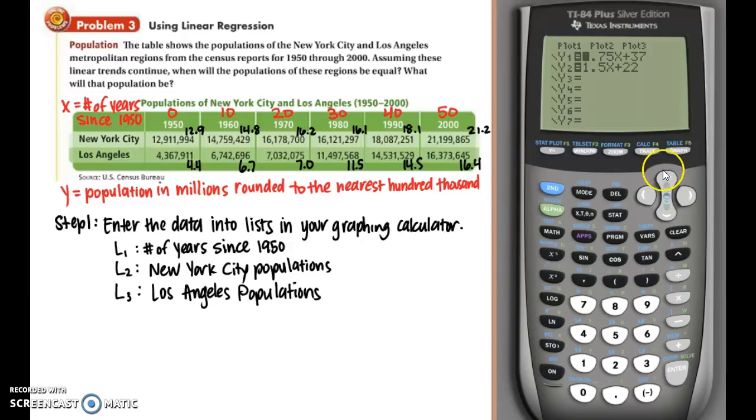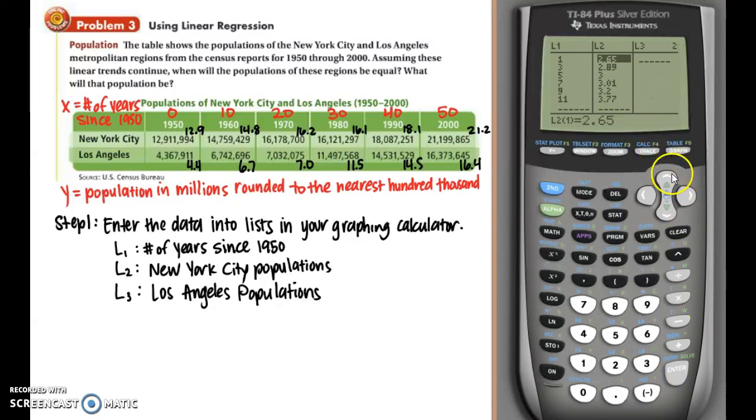So now we want to enter the data into lists in our graphing calculator. So first thing I want to do is go to y equals and clear the two equations that we had from the previous example. Now hopefully you remember the steps for linear regression. First thing you want to do is enter the lists. So go to stat, edit, and remember if you have values still in your two first columns, you want to clear that by highlighting the column title and pressing clear and then arrow down. And now let's enter our data values for list 1, 2, and 3. So this is what your list should look like. Feel free to pause here to catch up.